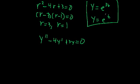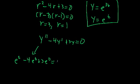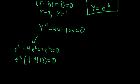Let's test to make sure these two functions actually satisfy the differential equation. Starting with y equals e to the t: its first and second derivatives are both e to the t. Plugging in, we get e to the t minus 4 times e to the t plus 3 times e to the t equals 0. Factoring out e to the t gives 1 minus 4 plus 3 equals 0, which is true — this function does indeed satisfy the differential equation.